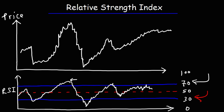Here the stock is overbought — I'm going to write OB for overbought — and here it's oversold. You can see the price is very low at the oversold region and very high at the overbought region. So the RSI indicator is very useful in determining if a stock gets overbought or oversold.